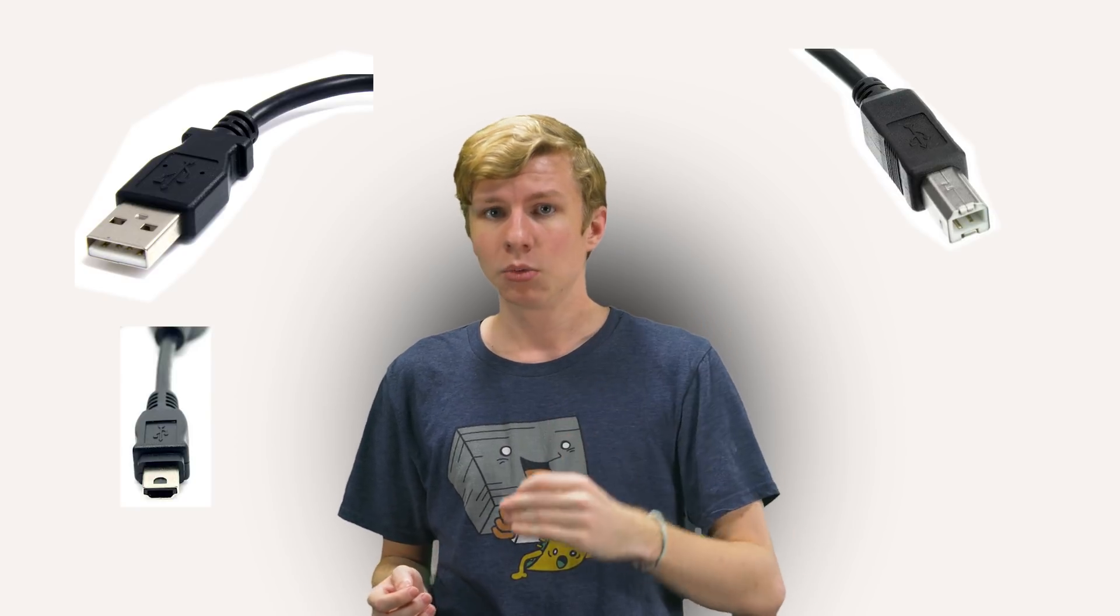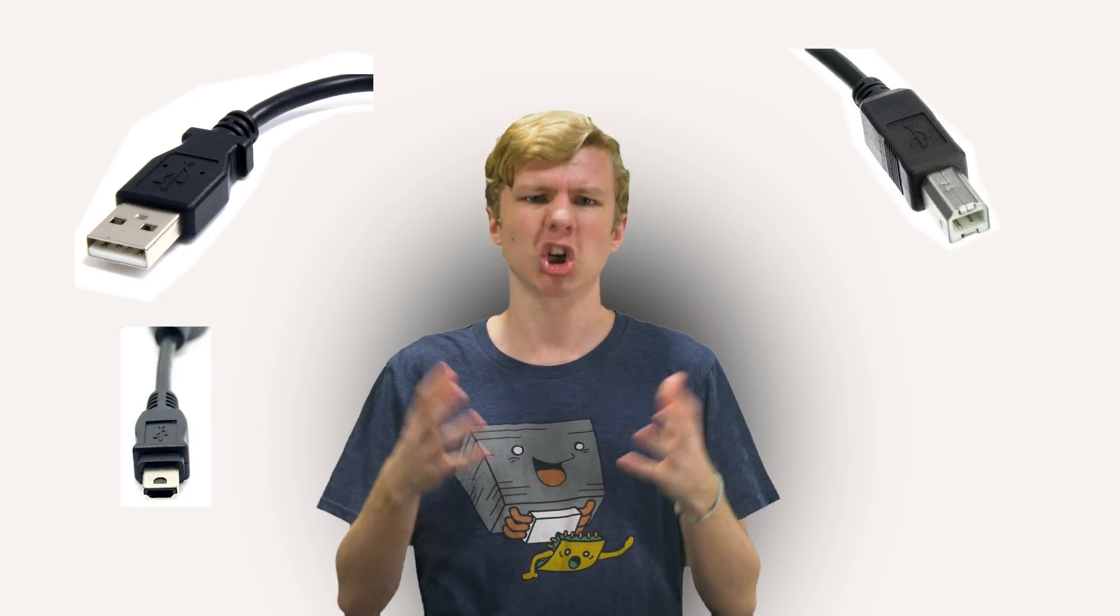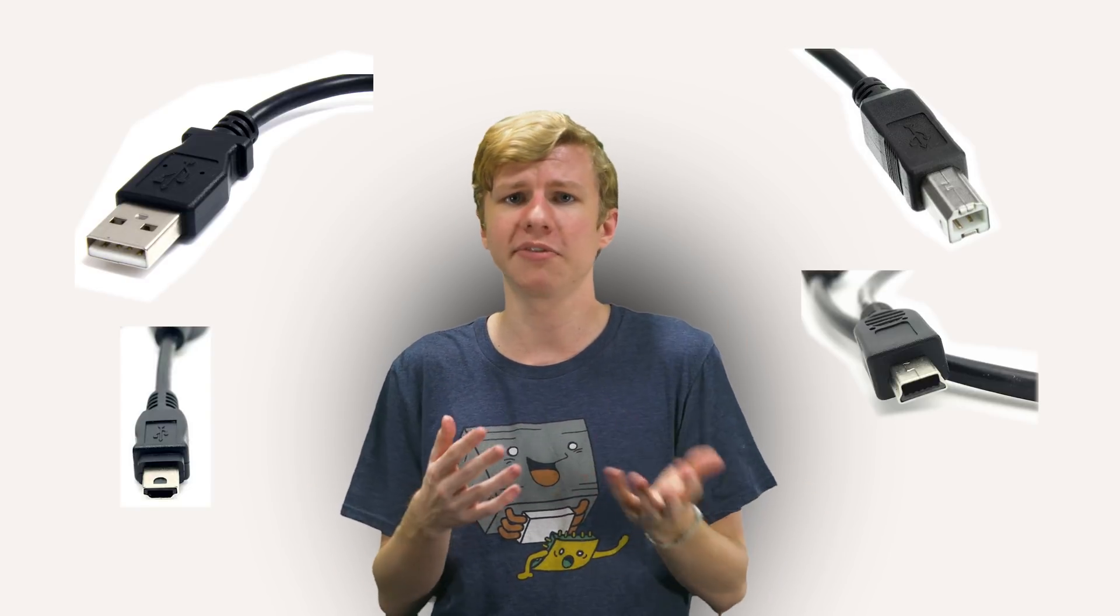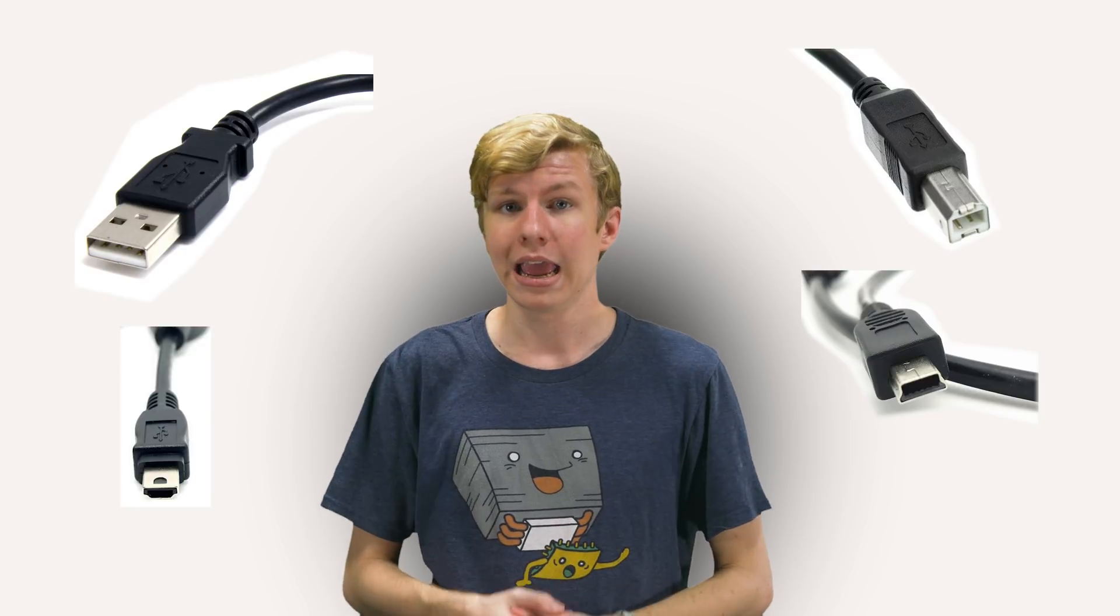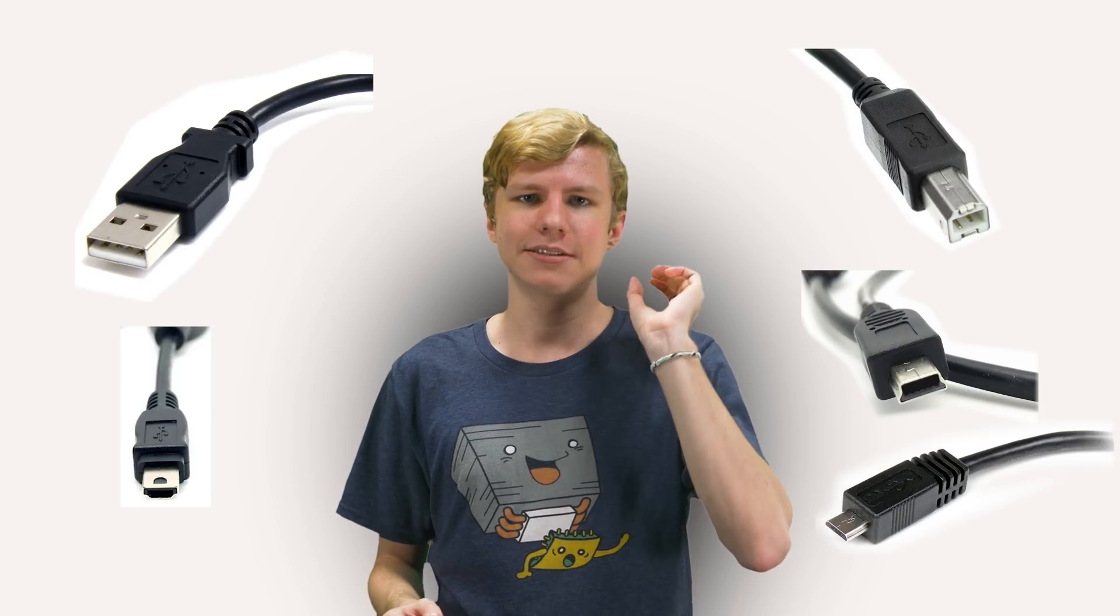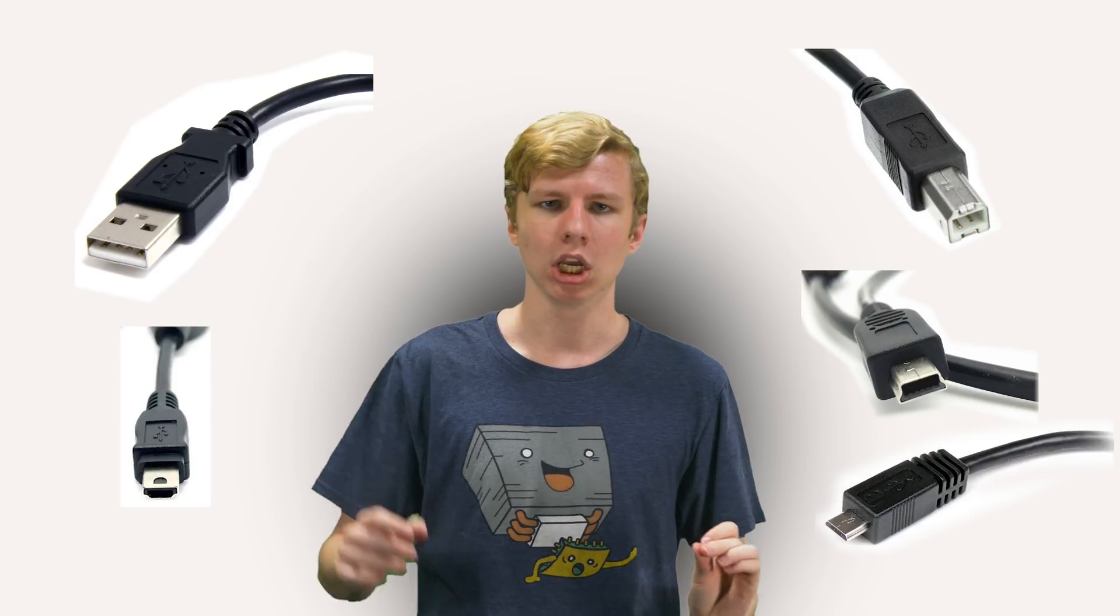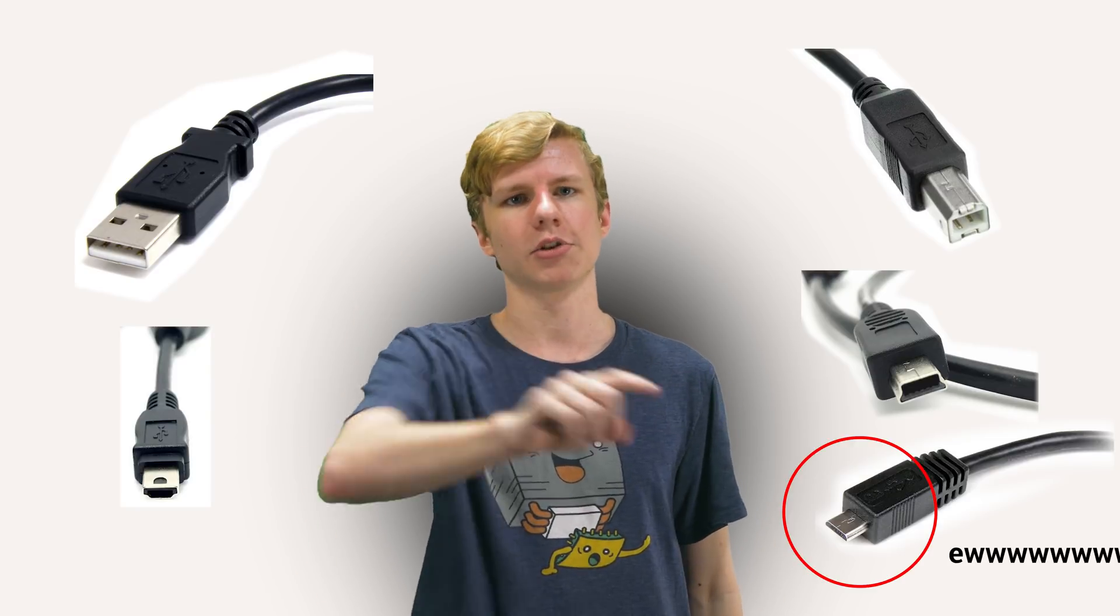Common connectors for USB include the Type-A, the ever-famous rectangle that you can never plug in right the first time, Mini-A, which really isn't used anymore. Type-B, which is most commonly found on larger devices like printers. Mini-B, the smaller form of B, which can still be found on things like calculators. And Micro-B, the slightly more compact replacement to Mini-B, which is one of the worst connectors ever created. Later with USB 3, we get different versions of these connectors, but we'll talk about that later.